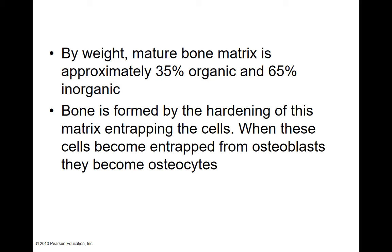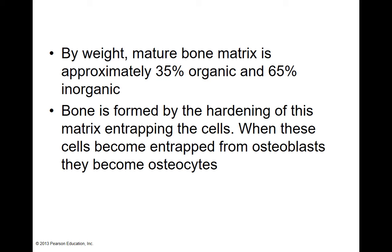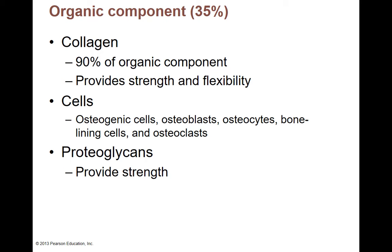An osteocyte is a mature bone cell. It's not building and not breaking down — it just helps maintain your bone tissue. So osteoblasts lay bone tissue down, become trapped in it, and then become mature osteocytes that just help maintain the matrix that surrounds them.